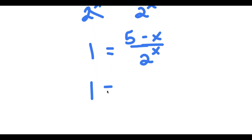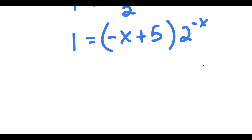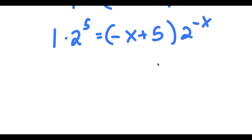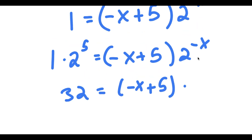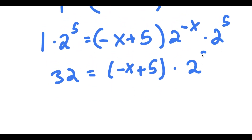Now this is the same thing as negative x plus 5 times 2 to the power of negative x. And if I multiply both sides by 2 to the power of 5, I get 2 to the power of 5 is equal to negative x plus 5 times 2 to the power of negative x times 2 to the power of 5. And 2 to the power of negative x plus 2 to the power of 5 is 2 to the power of 5 minus x. And 2 to the power of 5 is 32.